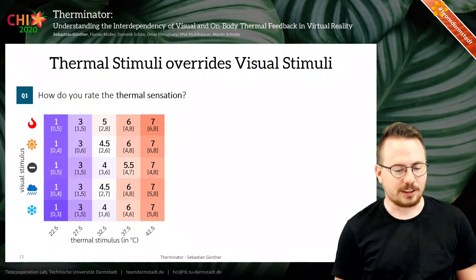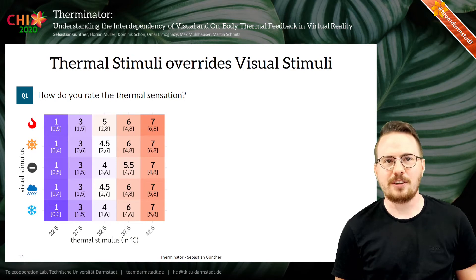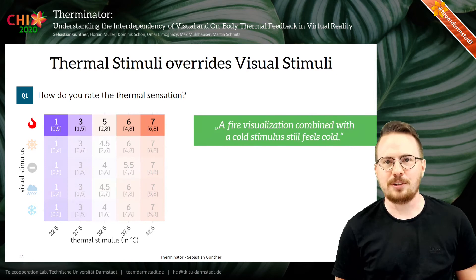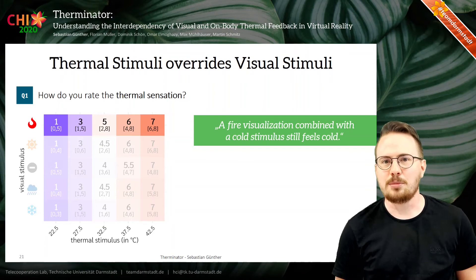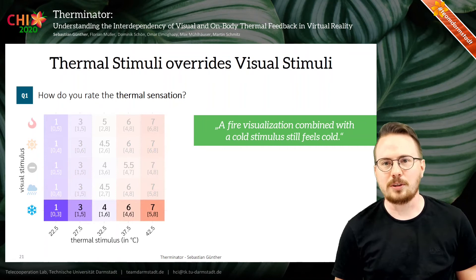As the first main result, we identified that every thermal stimulus always overrides the perception of visual stimuli. So, for example, if we have a fire visualization combined with a cold stimulus, it still feels cold. As you can see here, a lower number means a lower perceived thermal sensation and a higher number means a higher perceived temperature sensation. This was true for all other visualizations, and participants were always rating the applied thermal stimulus as the main factor for their temperature perception.